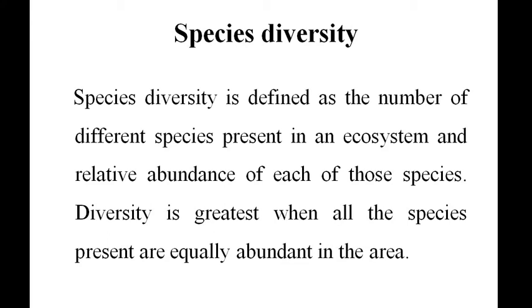Species diversity is defined as the number of different species present in an ecosystem and relative abundance of each of those species. Diversity is greatest when all the species present are equally abundant in the area.